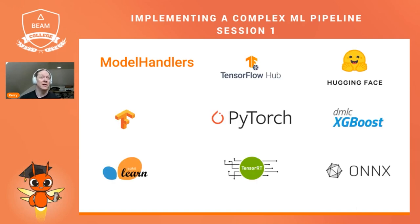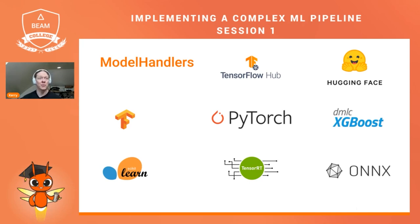We have model handlers already in the Apache Beam repository for a large number of different frameworks. We can pull models from TensorFlow Hub or Hugging Face directly, and we support TensorFlow, PyTorch, XGBoost, scikit-learn, TensorRT, and ONNX models. Because we handle ONNX models, you can compile a model from a framework we don't include to its ONNX format and run that. We also allow users to create their own custom model handler, and users with ML experience report it's fairly easy to implement one if needed.